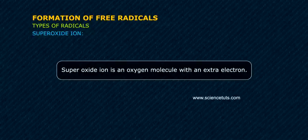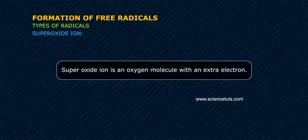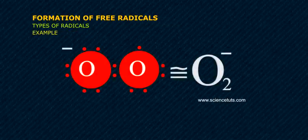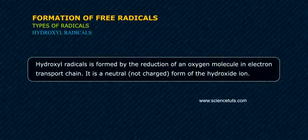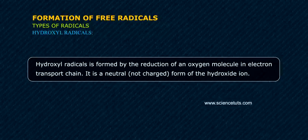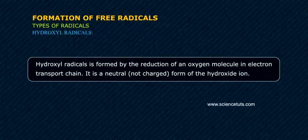Superoxide ion is an oxygen molecule with an extra electron. Example: O2−. Hydroxyl radical is formed by the reduction of an oxygen molecule in the electron transport chain. It is a neutral, uncharged form of the hydroxide ion.